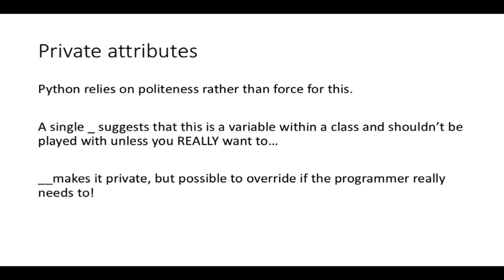Private attributes. Now Python relies on politeness. It's a very polite language. I know it was made by a Dutch person, but I imagine that the Dutch person that created this is a very polite chap. Possibly not in real life, but when it comes to attributes, he made a very polite version. So a single underscore suggests that this is a variable within a class and shouldn't be played with unless you really want to. It's the equivalent of saying please don't play with this. Double underscore makes it really private, and it is possible to override if the programmer really needs to. There's a little bit to discourage you, but nothing that find and replace wouldn't fix immediately. But if somebody's double underscored it, they're kind of making it serious.